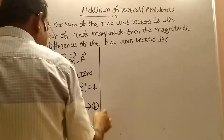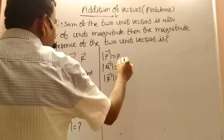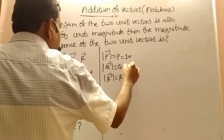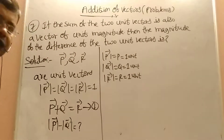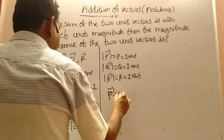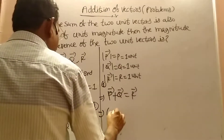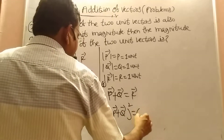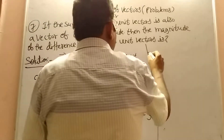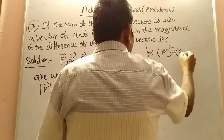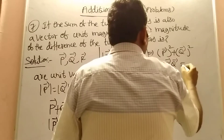We are taking mod P, mod Q values. Mod P we write as P, mod Q we write as Q, mod R we write as R, and each equals 1 unit, because these all are unit vectors. Now, taking P plus Q equals R as the first equation, squaring both sides: (P + Q)² = R², which expands as P² + Q² + 2(P·Q) = R².